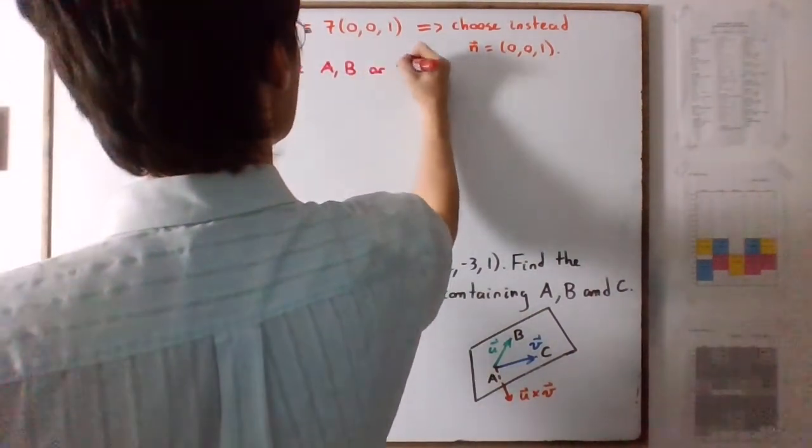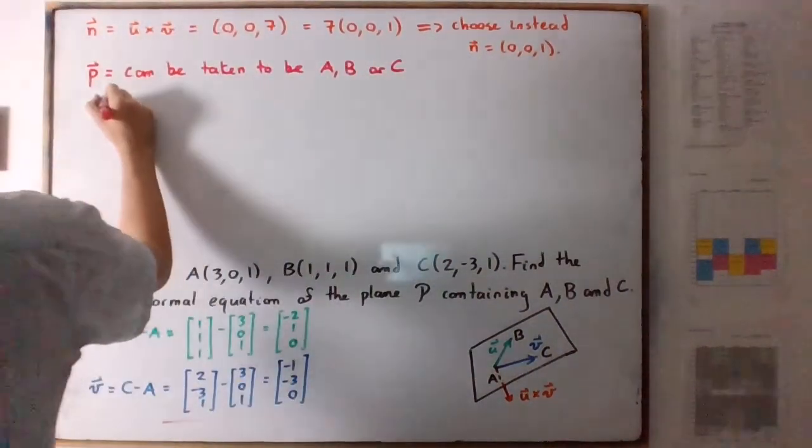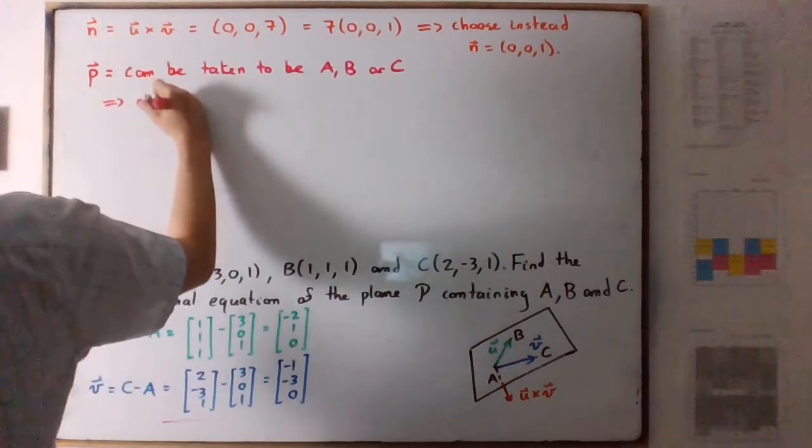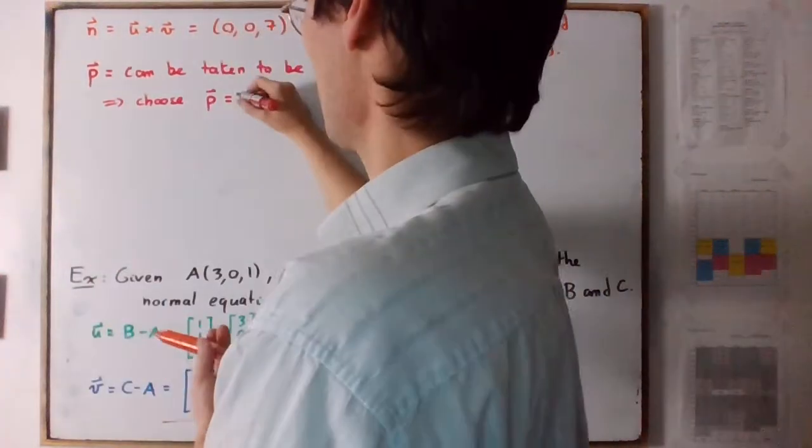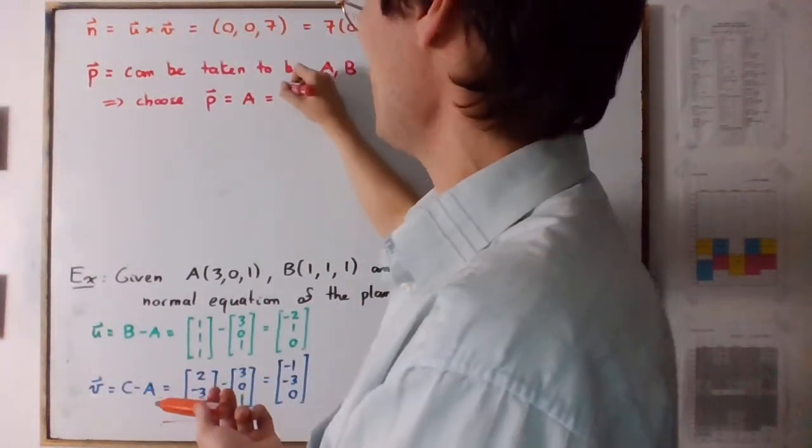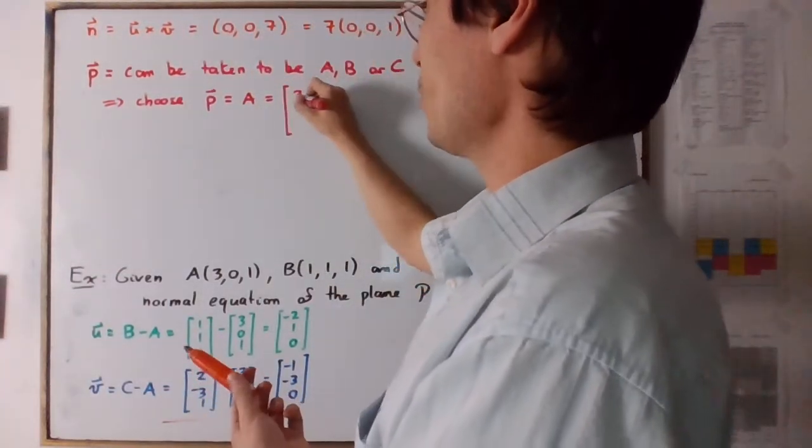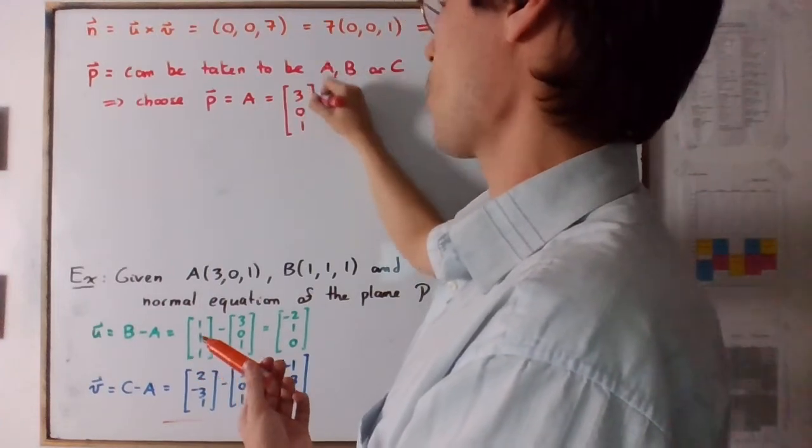So in other words, here we're going to choose P, we're going to choose, let's say A. So let's choose that P is equal to A, so write it as a vector, which means 3, 0, 1.